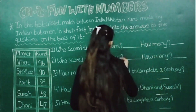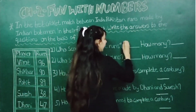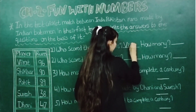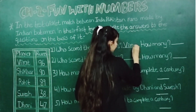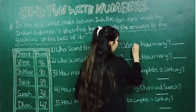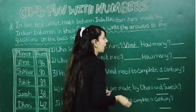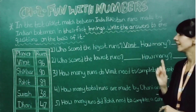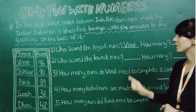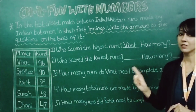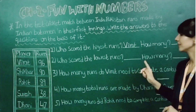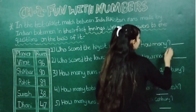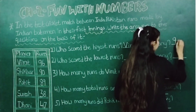So in this blank you will write Virat. Now how many runs has he made? He has made 96 runs. So in this blank you will write 96.